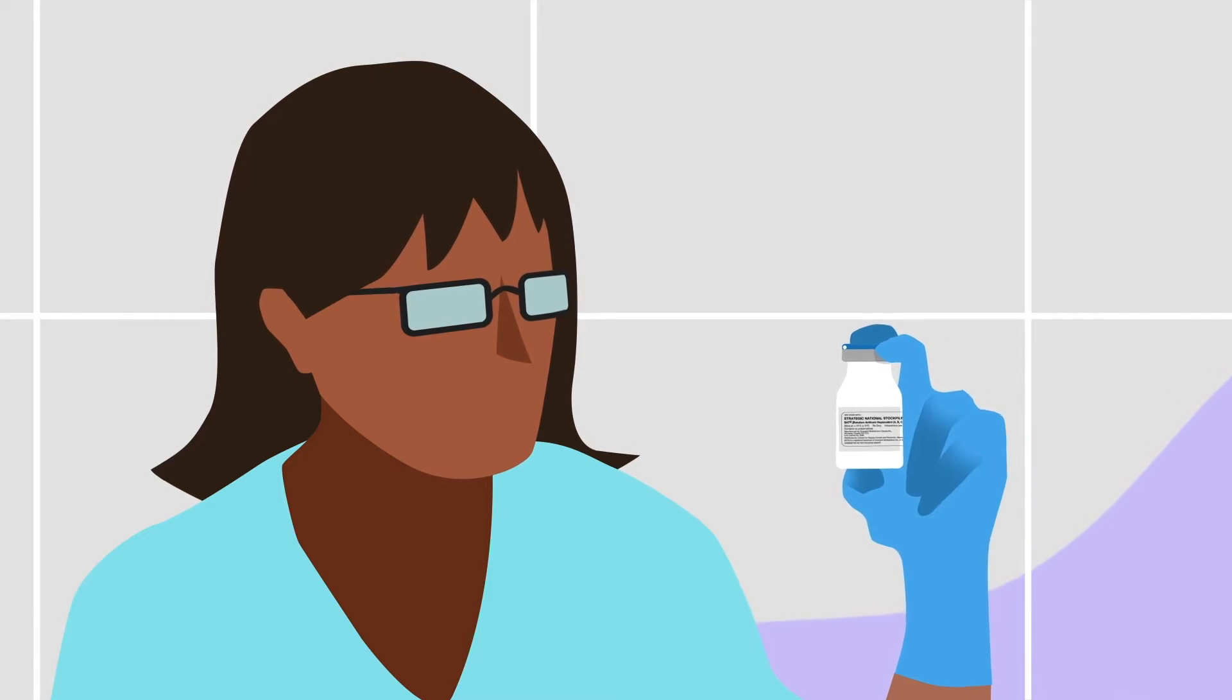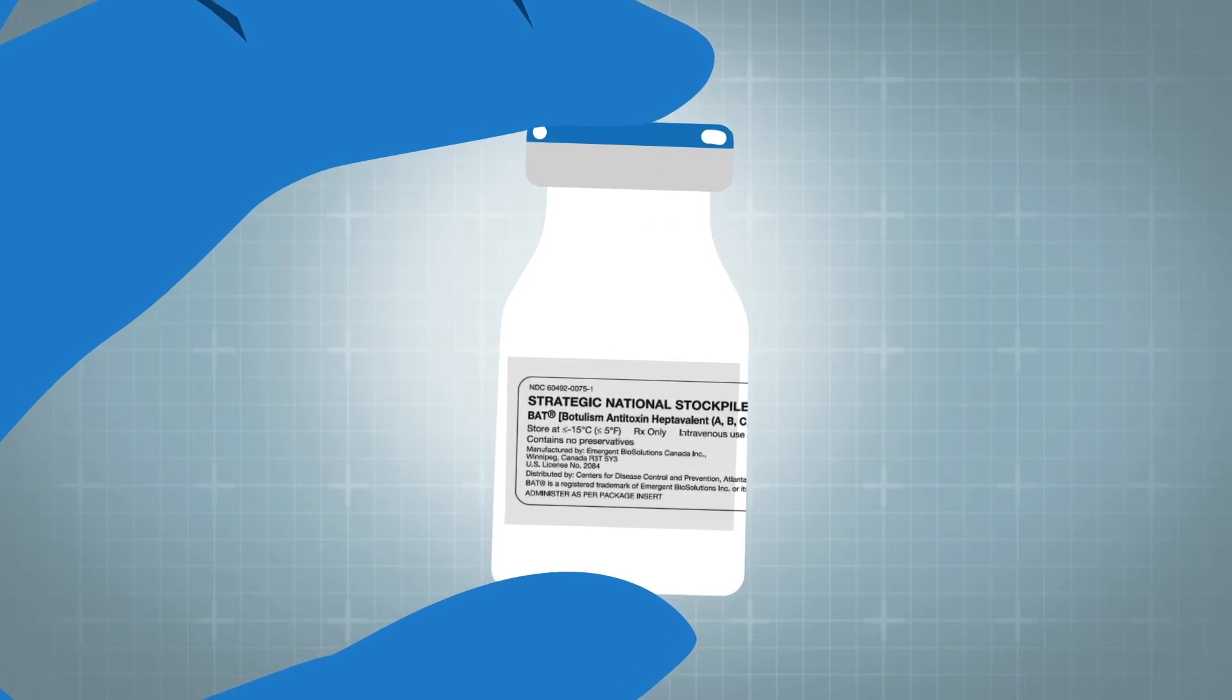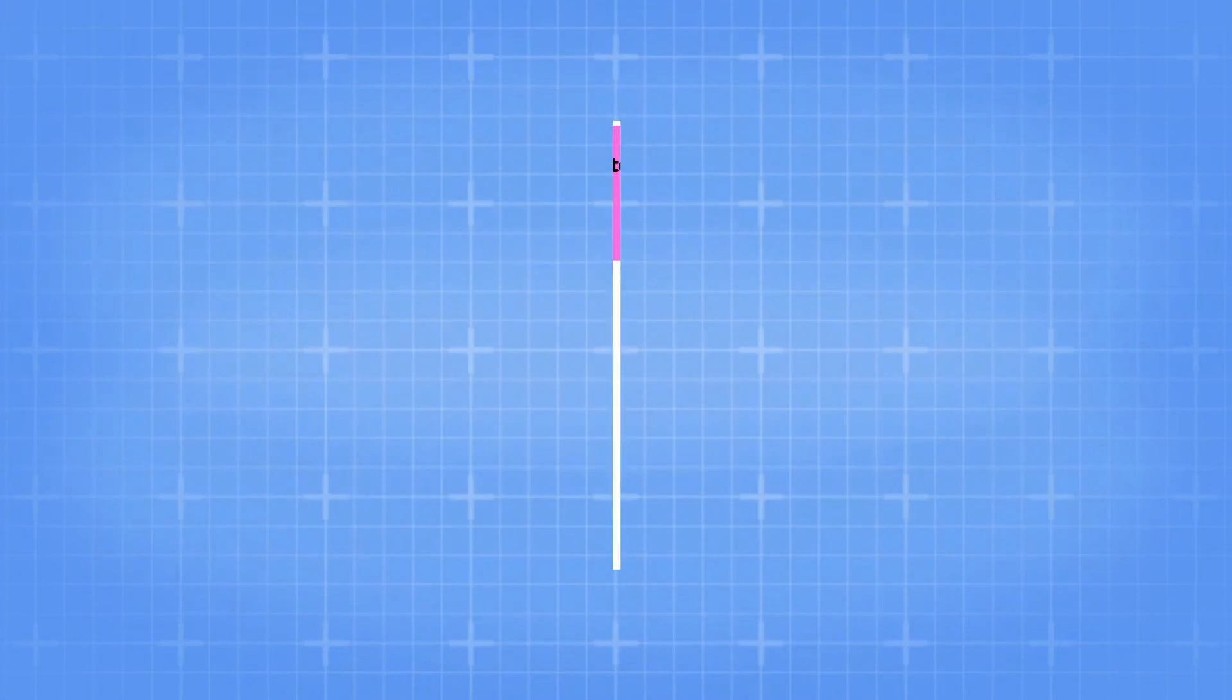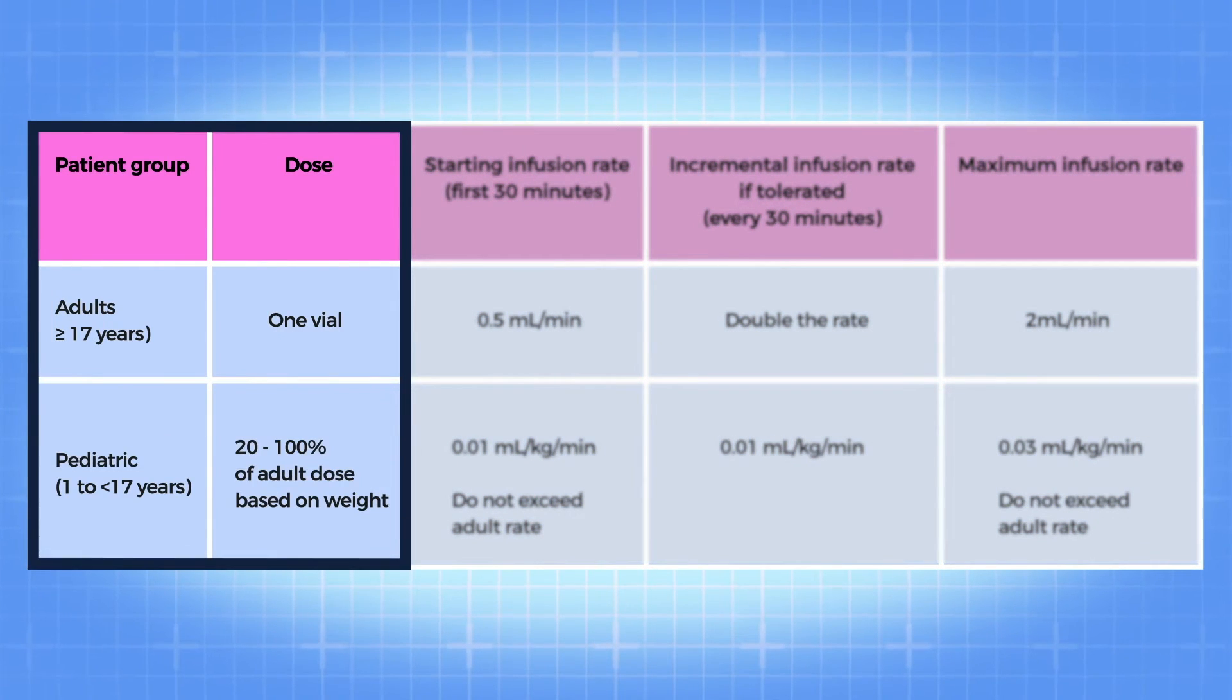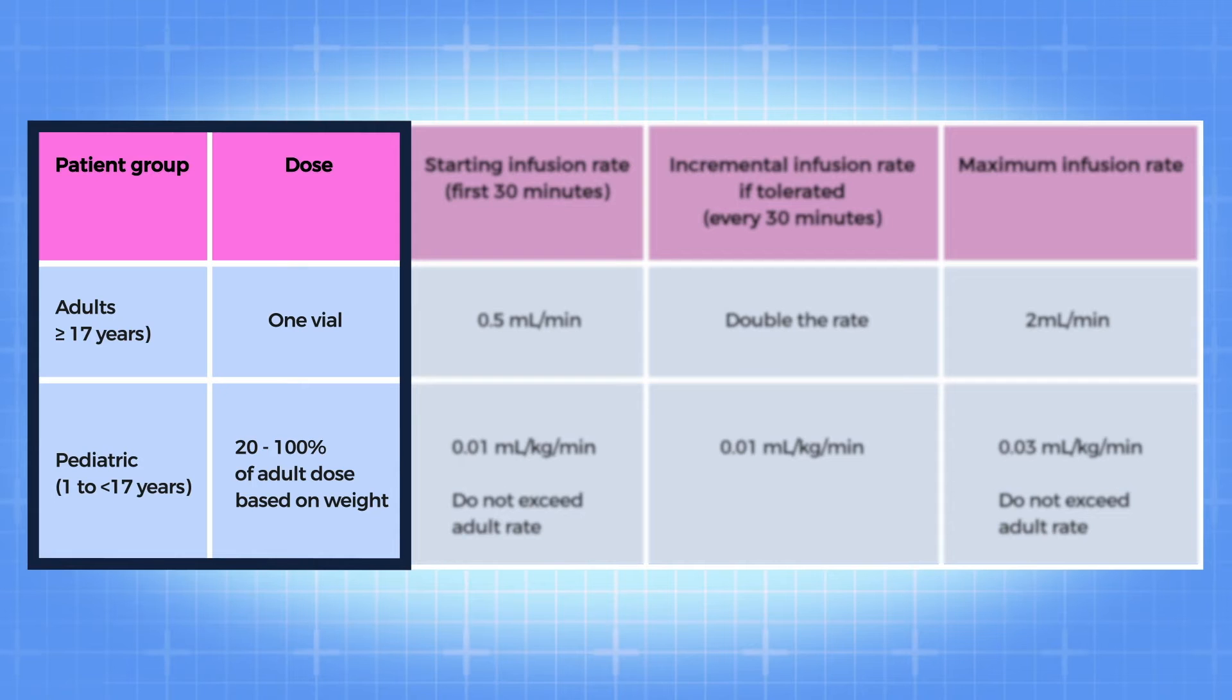The volume in the vial varies by lot number. Vials typically contain 10 to 22 milliliters. Withdraw the entire contents of the vial to measure the volume, so you can accurately calculate the amount needed in the 1 to 10 dilution. The dose for adults is one vial. The dose for children is a percentage of one vial based on weight. Refer to the package insert to calculate the pediatric dose. Discard any unused antitoxin because it does not contain a preservative. Each vial is for a single use.